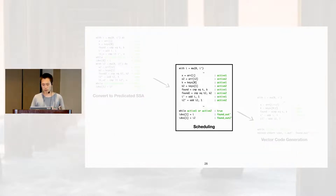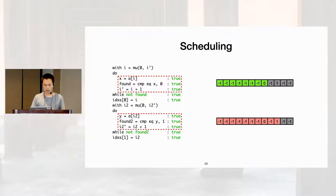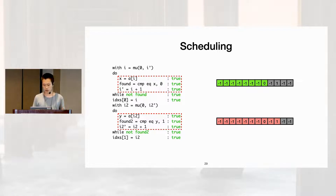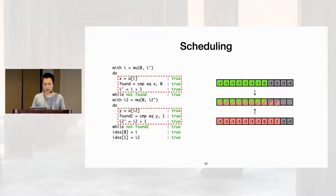I'll now explain how, after identifying isomorphic instruction sequences, we reorder them to be grouped together while preserving all dependencies. Using a simplified motivating example: two loops, the first searching for zero, the second for one in the same array. Because the loops have isomorphic instructions, we want to pack those into equivalent vector instructions. This first requires creating a single loop that executes the bodies of both originally disjoint loops together — we identify shared instruction sets, hoist them out of the loops, and fuse the loops.